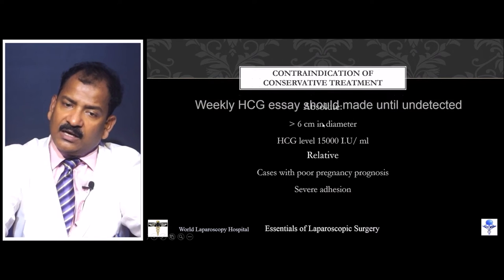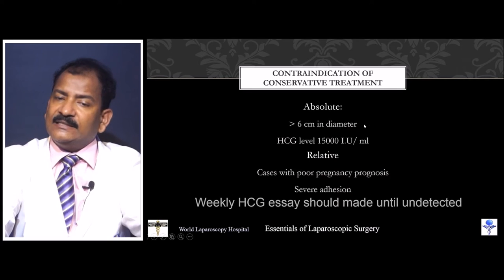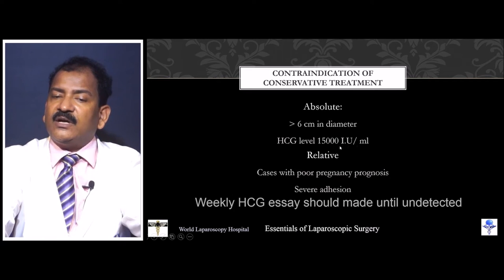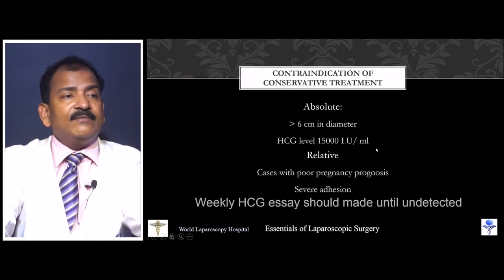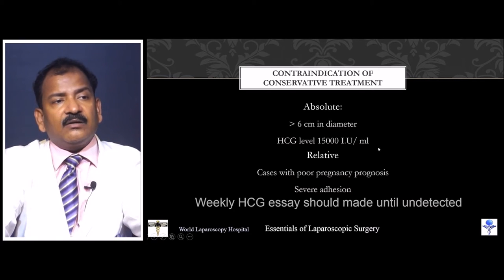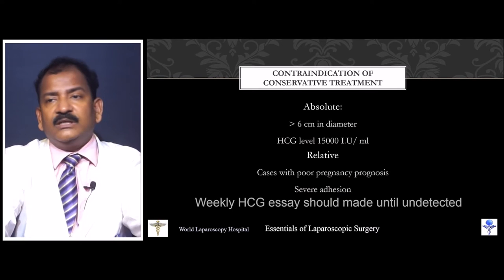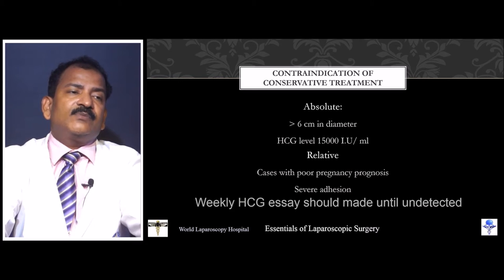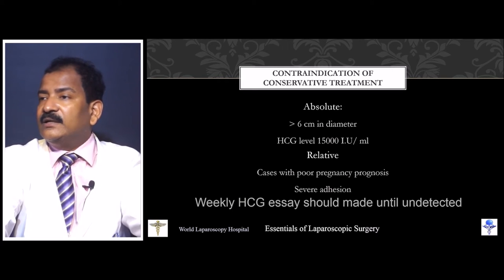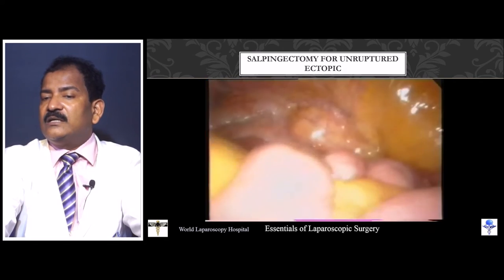Absolute contraindications for salpingotomy are: trophoblast diameter more than 6 cm, or beta-HCG level of 15,000 IU or more. Relative contraindications for conservative management include cases with poor pregnancy prognosis, severe adhesions, and weakly declining beta-HCG — which also must be monitored until undetectable.